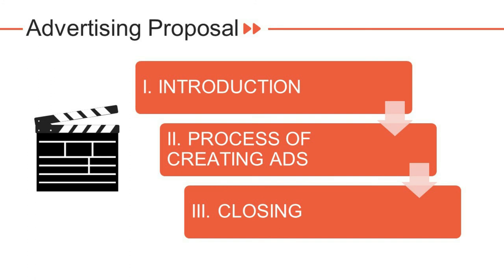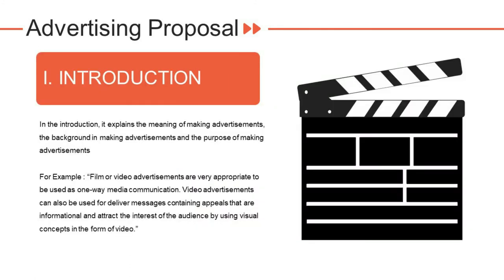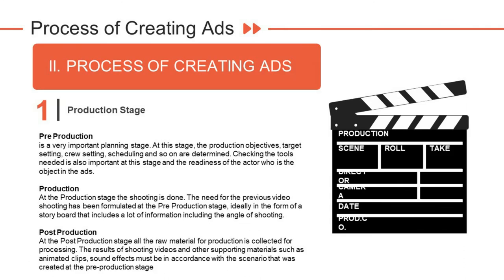An advertising proposal is divided into three parts: introduction, process of creating ads, and closing. In the introduction, it explains the meaning of making an advertisement, the background, and the purpose. For example, film or video advertisement is an appropriate one-way media communication tool that can deliver messages with informational appeals and attract audience interest using visual concepts in the form of video.